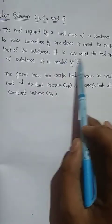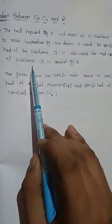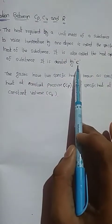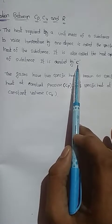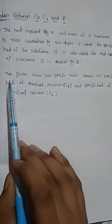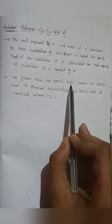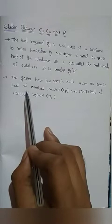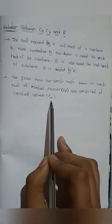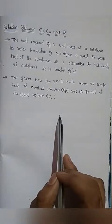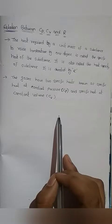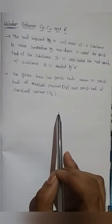Specific heat is also called the heat capacity of a substance, and it is denoted by capital C. Now, gases have two specific heats: specific heat at constant pressure, that is Cp, and specific heat at constant volume, that is Cv. For gases like oxygen, carbon dioxide, hydrogen, etc., we use both Cp and Cv values.